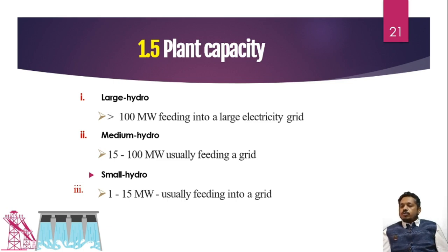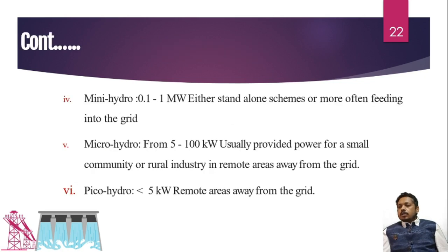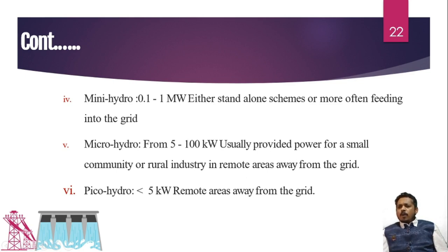Medium hydro power plant is where we produce electricity from 15 megawatts to 100 megawatts. Next is the small hydro power plant, in which we produce electricity from 1 megawatt to 15 megawatts. All these types are connected with the grid. Next is the mini hydro power plant, where the capacity is a few kilowatts up to 1 megawatt maximum.